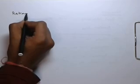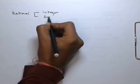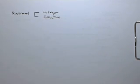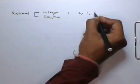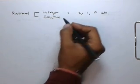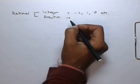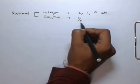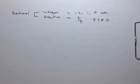Rational numbers can be classified into integers and fractions. Integers are rational numbers which do not have a decimal or fractional part, like -2, 1, 0, etc. On the other hand, fractions are rational numbers which are in the form of P by Q, where P and Q are not equal to 0 and P is not a multiple of Q.